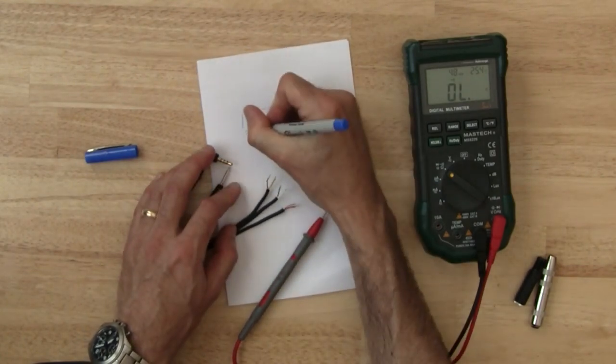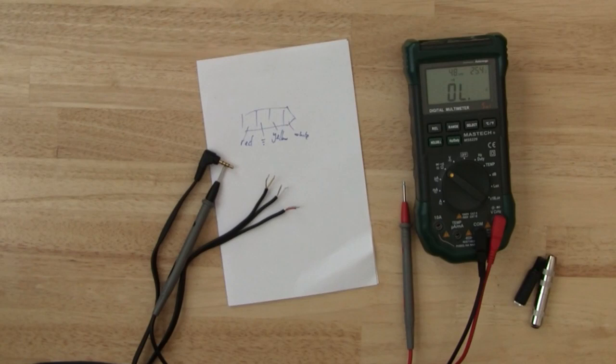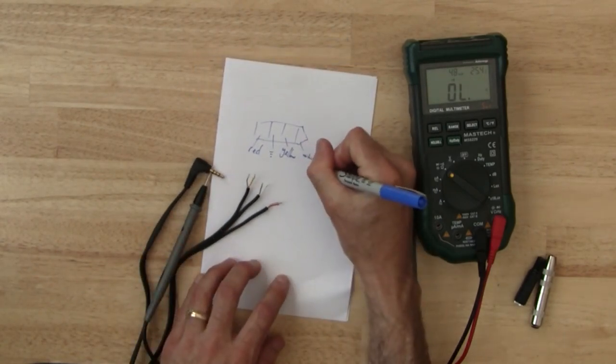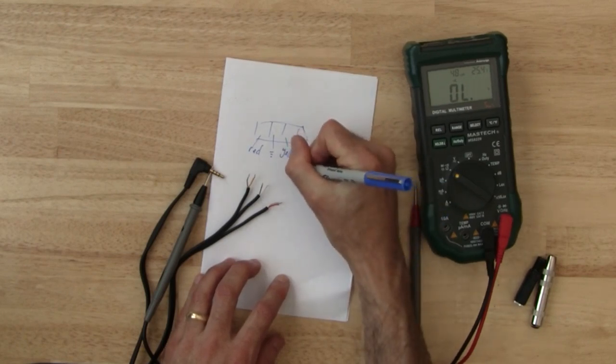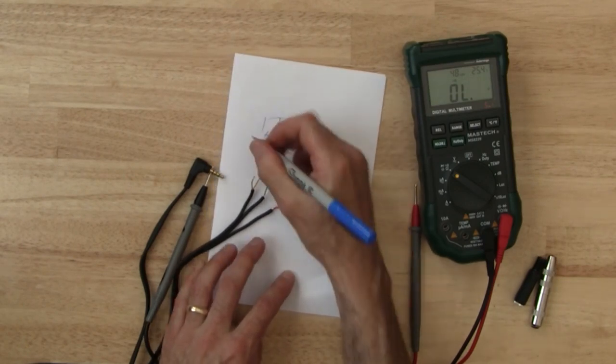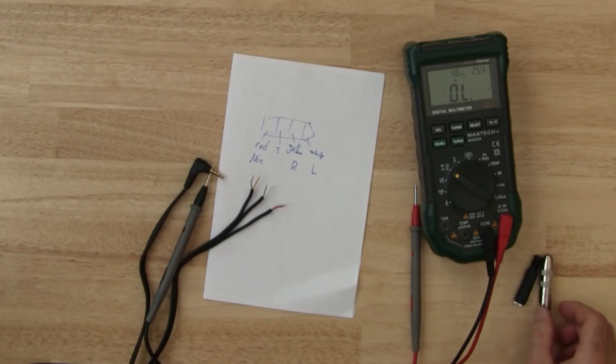And that leaves the sleeve which by process of elimination must be red and it is. Now I've looked these up on a pinout online and found that the tip is the left signal, the first ring is the right signal, then there's the ground and the sleeve is the mic.